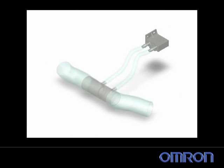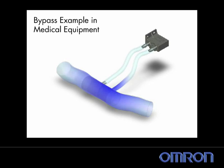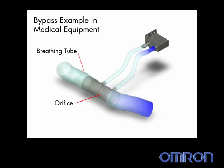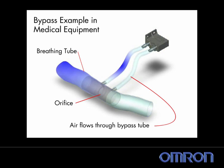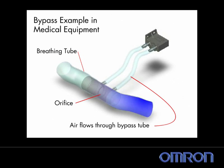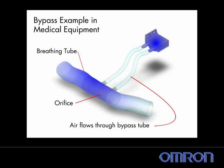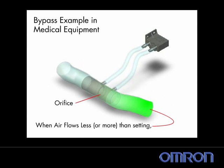This animation shows how a D6FP might be used in a bypass setup for a medical application. The one LPM device can be used to measure a proportional amount of the flow going through the main tube, making it possible to use a smaller, less expensive device in applications requiring up to 200 LPM.